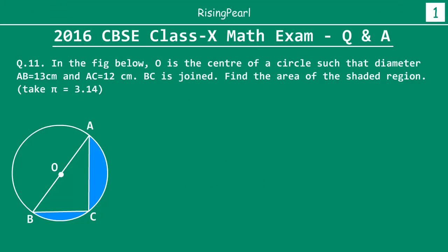Question number 11 goes like this: in the figure below, O is the center of a circle such that the diameter AB has a length of 13 cm, and AC is another line whose length is given as 12 cm. AB is a diameter passing through the center, and B and C are joined.